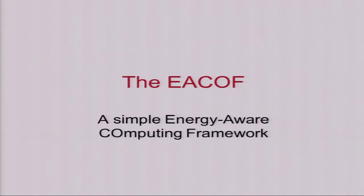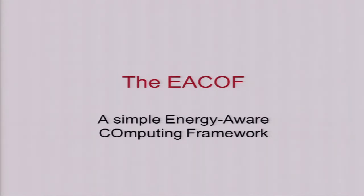One way of enabling energy transparency is monitoring applications at runtime. Our second-year students developed an API to do exactly this, which they called the Energy Aware Computing Framework. They applied their API to profile a set of sorting algorithms from different complexity classes, applied to natural numbers in arrays in the range between 0 and 255, coded as integers of different bit widths: 8, 16, 32, and 64 unsigned ints.